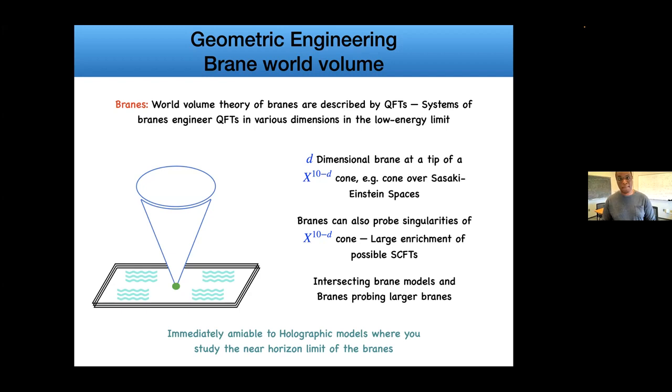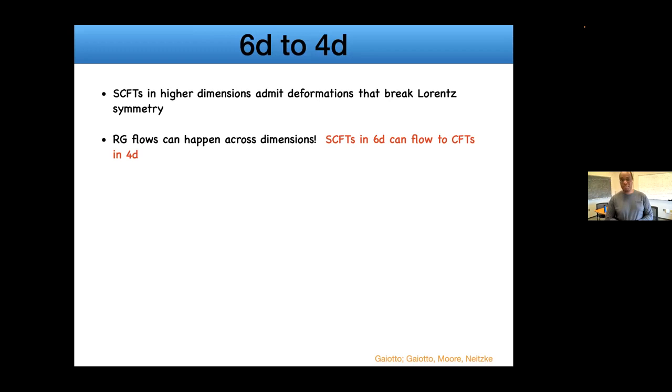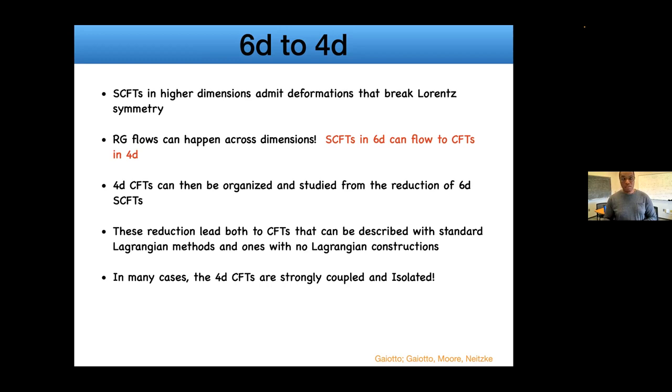At a more modern level, something interesting recently is to think about CFTs in higher dimensions and consider Lorentz-breaking deformations. In such cases, we can consider flows from 6D to 4D CFT. The 4D CFTs themselves can be organized precisely as being defined by the flow itself. Twisted reduction will lead to CFTs that both have standard Lagrangian perspective, but most are going to be non-Lagrangian, meaning they're strongly coupled and in some cases isolated. When we say non-Lagrangian, we haven't had a way of constructing the Lagrangian that flows to them.